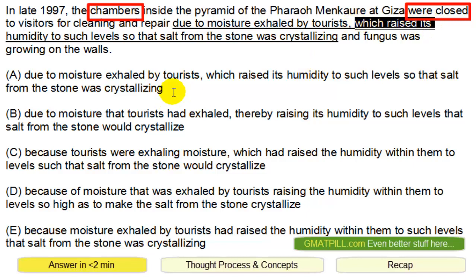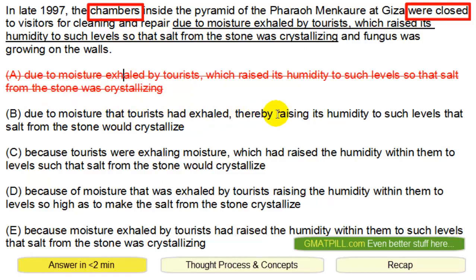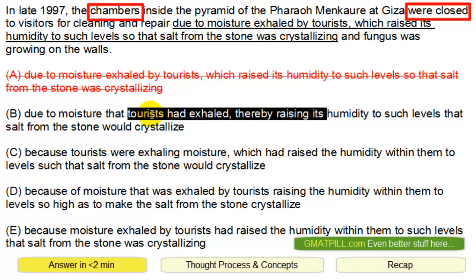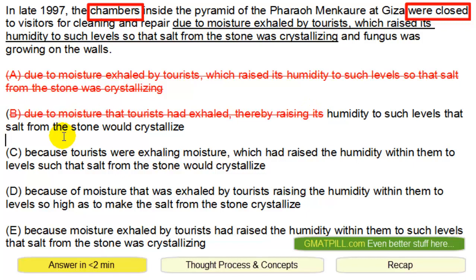Alright, so this is all off. A is no good. Due to moisture that Taurus had exhaled, thereby raising its humidity. Similar issue. Because Taurus were exhaling moisture, which had raised the humidity within them — so basically the chambers were closed because Taurus were exhaling moisture, which had raised...